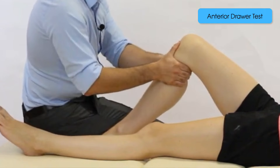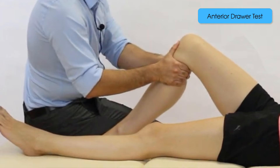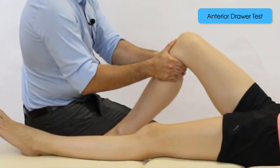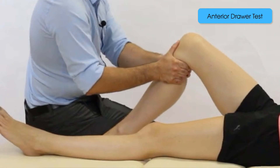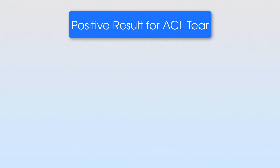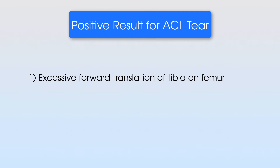We perform the test by gently pulling the tibia forwards anteriorly upon the femur, which we can achieve by leaning backwards slightly during the test whilst keeping our arms firmly still. We observe and feel for the amount of movement of the tibia relative to the femur, and we're also feeling for end feel — the quality of the endpoint. A positive result shows increased movement of the tibia on the femur and a soft endpoint, just like in the Lachman's test. This can only be confirmed by comparing the injured leg to the non-injured leg.